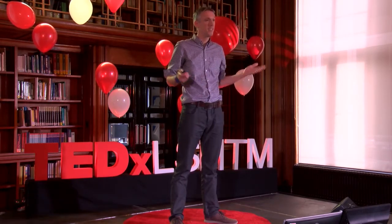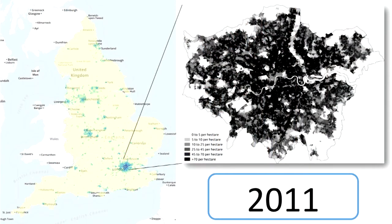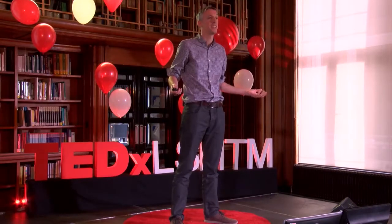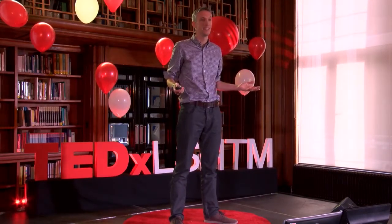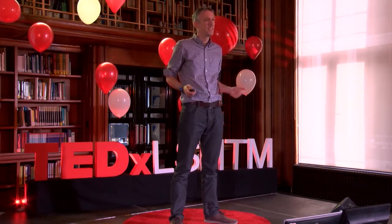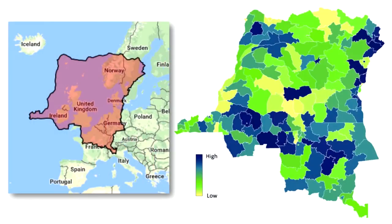Let's go back to the UK — fantastic data again. For every single small area in the country, we have estimates of the number of people, the number of children. It comes from a relatively recent census, kept up to date by good registers of births and deaths. Surely, if a small country like the UK can do this, a much bigger country impacted by infectious diseases will have good data as well. This is the Democratic Republic of Congo in the centre of Africa.